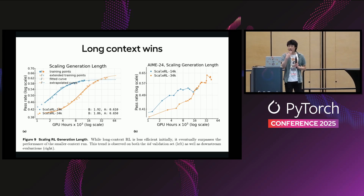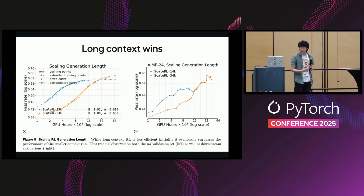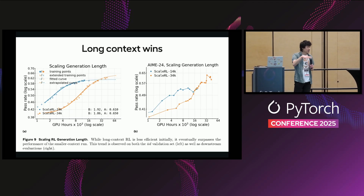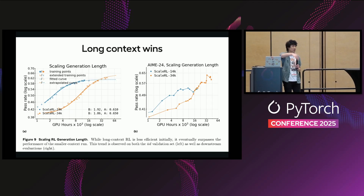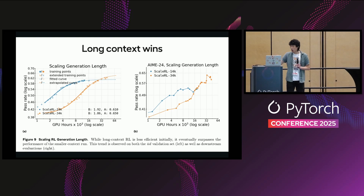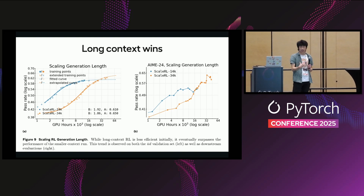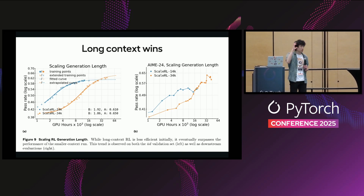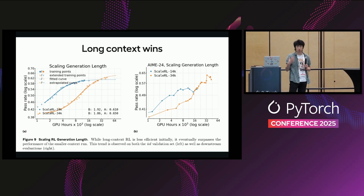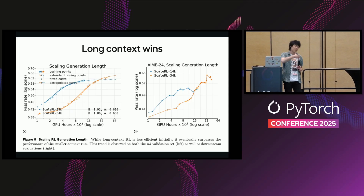During RL, long context kind of wins. At the very beginning of training, shorter context lengths can win versus a long context RL process. However, over time once you wait longer, the longer context RL training run actually defeats the shorter context run. So in short-term scenarios you can't actually see which is better — is long context better, is short context better? Unfortunately you do need to wait for this to play out.